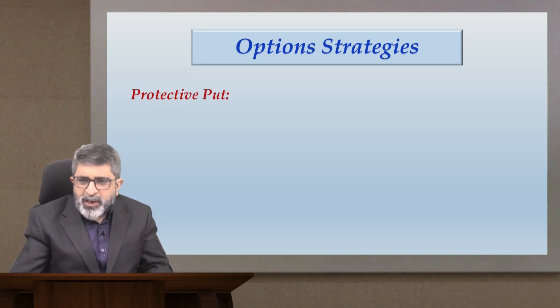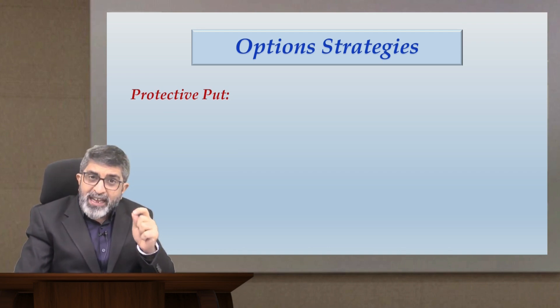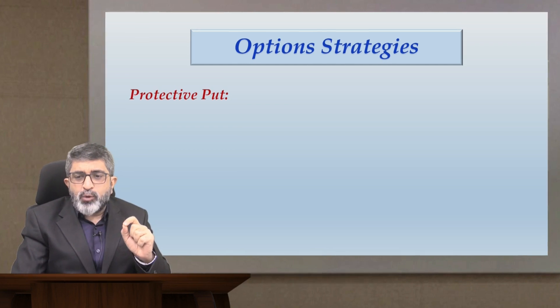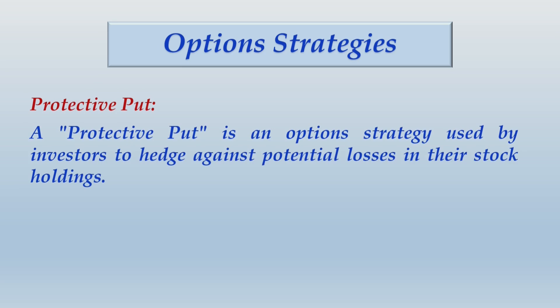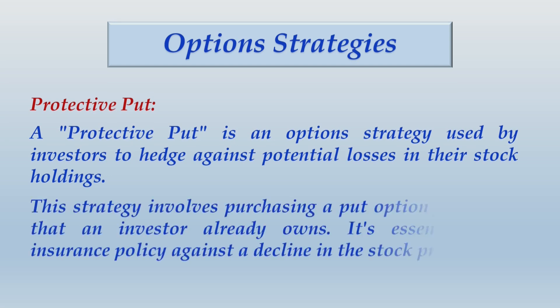What exactly is protective put? I'm going to explain this through an example, but first write down something very important. Under the heading 'Option Strategies' write 'Protective Put,' and under that write: a protective put is an options strategy used by investors to hedge against potential losses in their stock holdings. This strategy involves purchasing a put option for stocks that an investor already owns. It's essentially an insurance policy against a decline in the stock price.